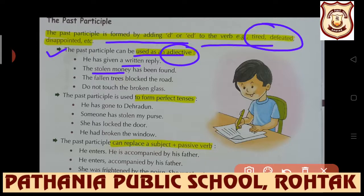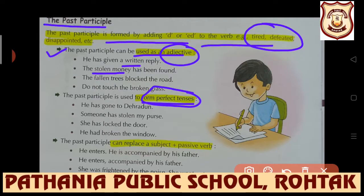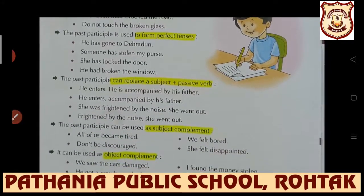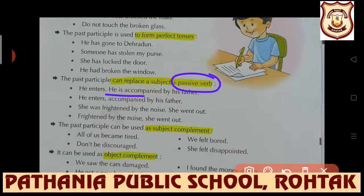The past participle is used to form perfect tense: 'He has gone to Dehradun' - if present perfect tense is used, the formation is 'has/have' plus third form of the verb. The past participle can also replace a subject plus passive verb: 'He enters. He is accompanied by his father.' A passive verb means 'is/am/are' plus third form or 'was/were' plus third form. In such cases, the past participle can replace a subject plus passive verb: 'She was frightened.'